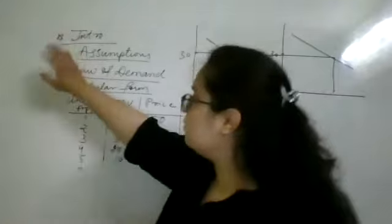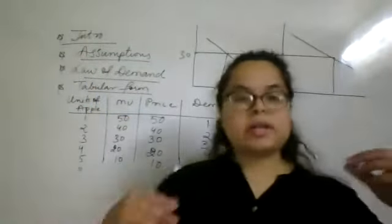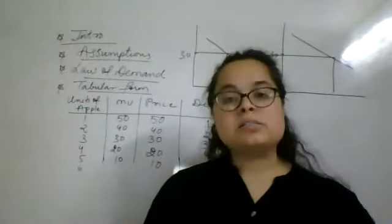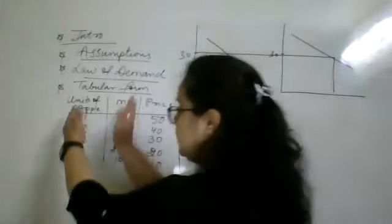So the first step is our intro, assumption, law of demand, tabular form. Tabular form, you will explain a little bit in sentences. If we are consuming more apples, our marginal utility is going to be reduced. So first, tell us about these two.